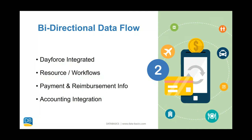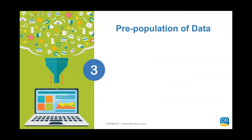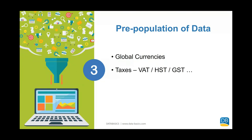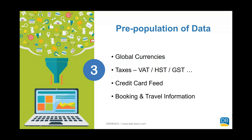Beyond the Ceridian integration, we would also look to integrate our application into a customer's accounting system, where there may be push and pull of data relating to the GL structure and the accounting side. The application is a global solution — whether we're talking about individuals traveling between the U.S. and Canada, or going beyond North America, all global currencies are pre-populated. Tax calculations are pre-populated, credit card feeds are pre-populated, as well as booking and travel data. We look to load as much third-party information into our solution to streamline the process and make it easier for the user to create their expense report.